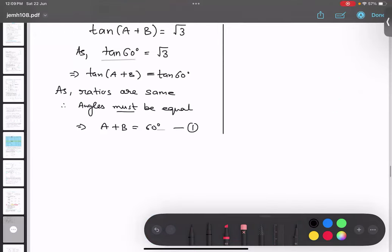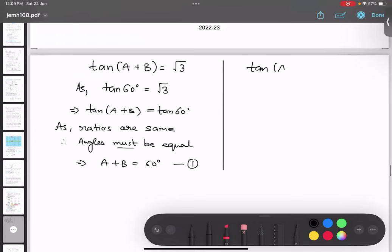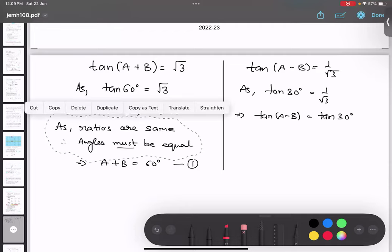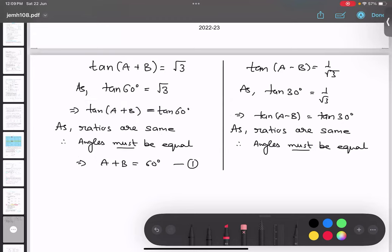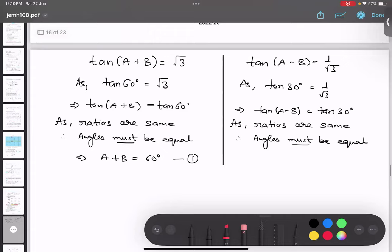So I will write the same as tan(A - B) equals 1 upon root 3. As tan 30 degree equals 1 upon root 3, therefore tan(A - B) equals tan 30 degree. As ratios are same, angle must be equal. Therefore A - B equals 30 degree, so this is my second equation. Any doubt as of now?